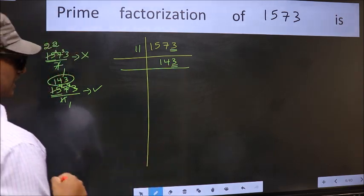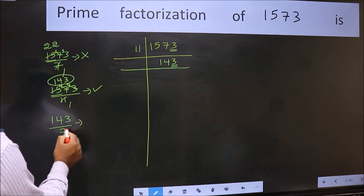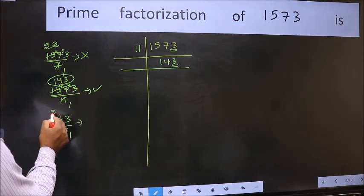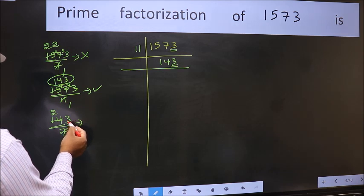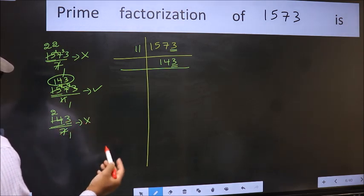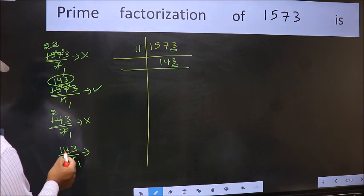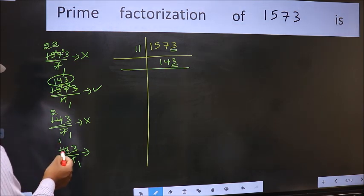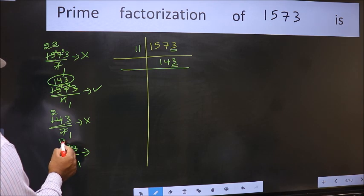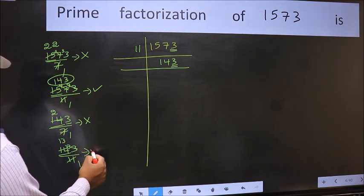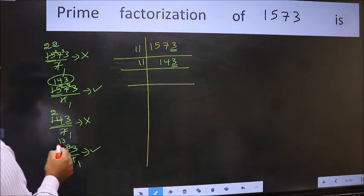Next prime number 7. Let us check divisibility by 7. 14 is in the 7 table: 7 twos are 14. Now we have 3 remaining, and we don't get 3 in the 7 table, so a number is left out. This is not divisible by 7. Next, let us check with 11. A number close to 14 in the 11 table is 11 once, 11. 14 minus 11 is 3; carry forward to get 33. 11 threes are 33, so no number is left out. This is divisible by 11. So we write 11 here and the quotient is 13.